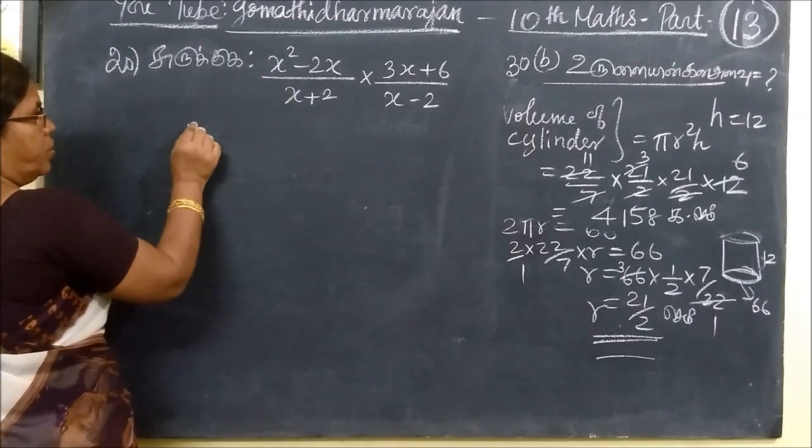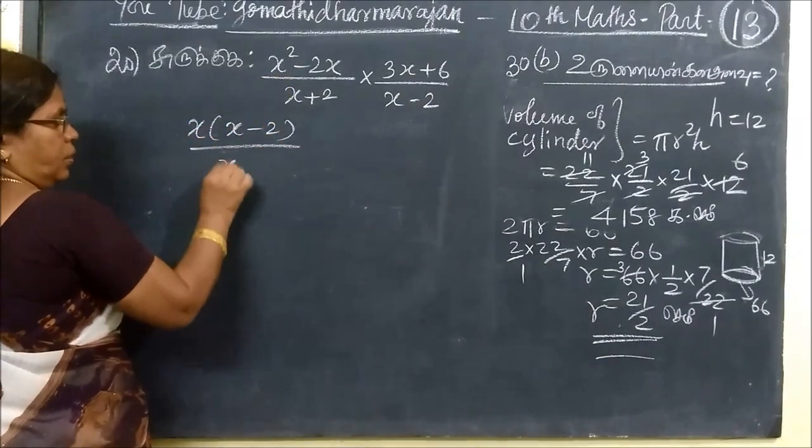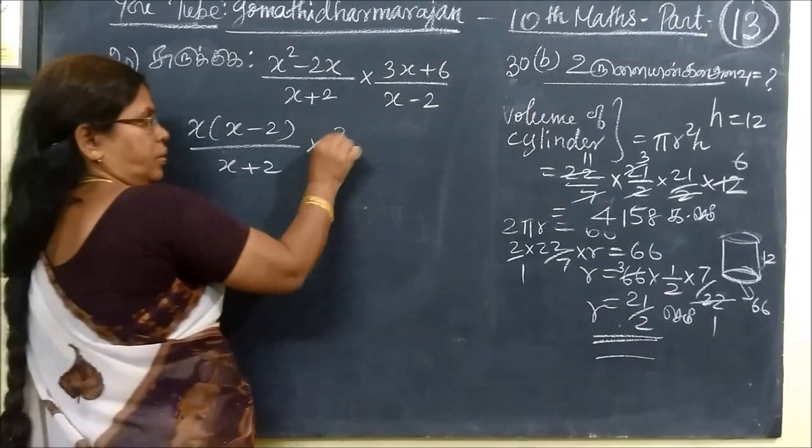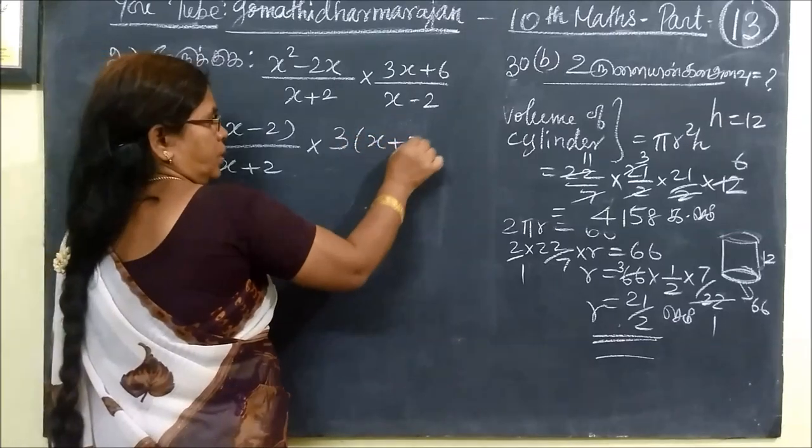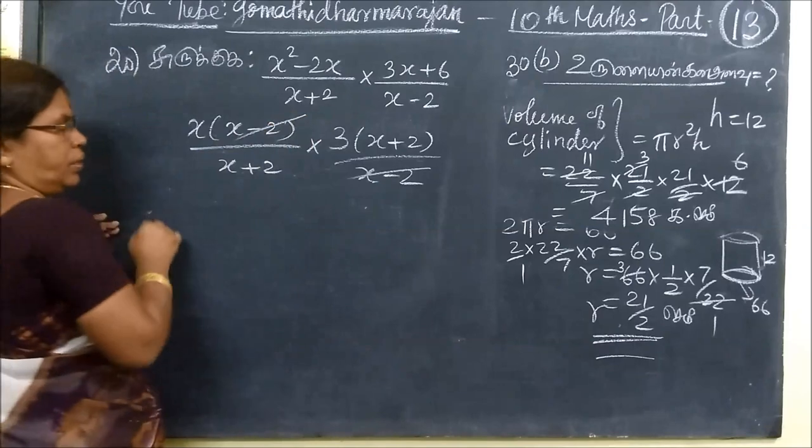This is x squared minus 2 divided by x minus 2, times x plus 2 divided by x minus 2. So x minus 2, x minus 2, x plus 2, x plus 2.